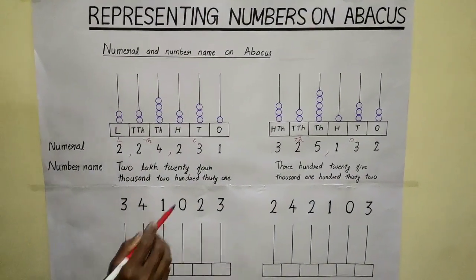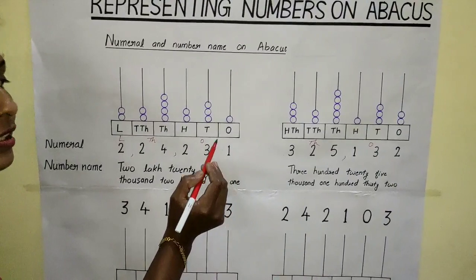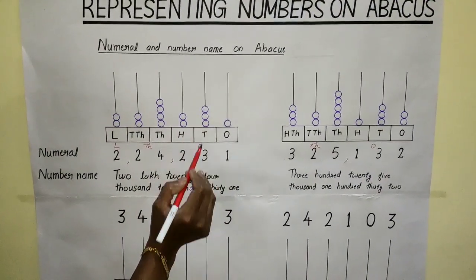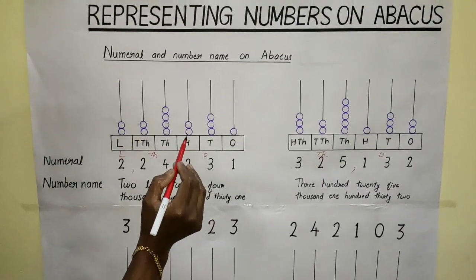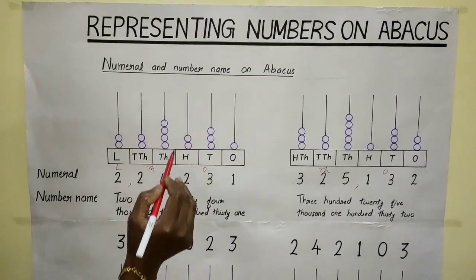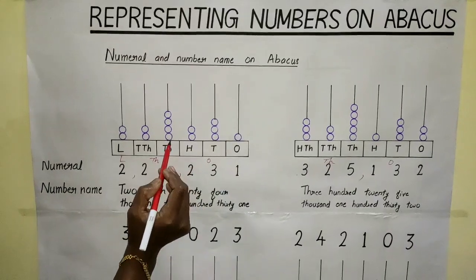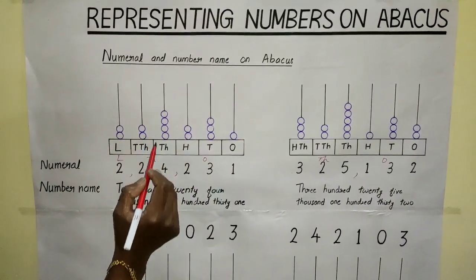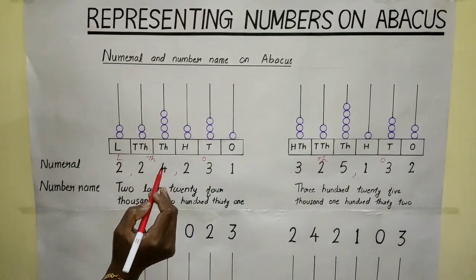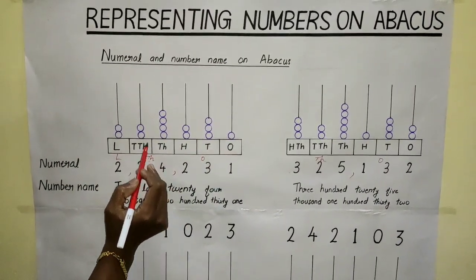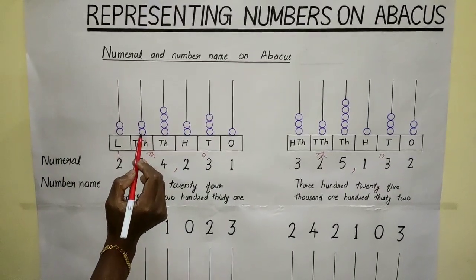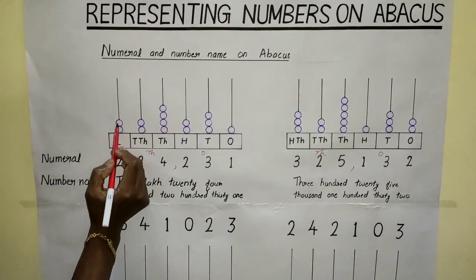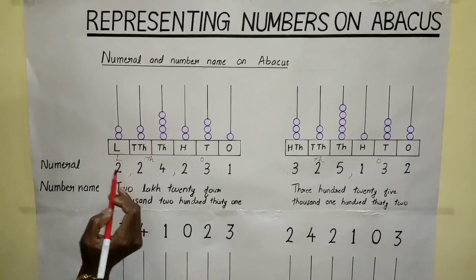One's place is occupied by only one bead. Ten's place has three beads. Two beads are occupied in hundreds place. Four beads are occupied in thousands place. Beads in ten thousands place is two. Beads in lakhs place is two.